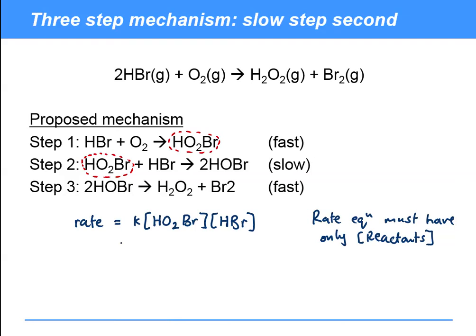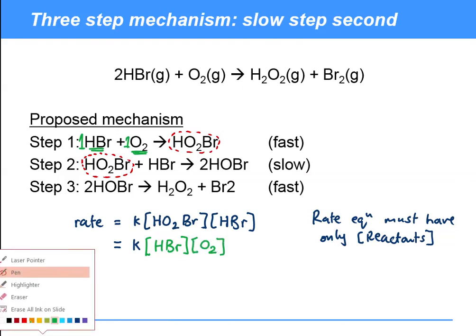Feel free to rewind if that didn't make sense, but that's what I'm going to do. So I'm going to see that this was formed by one oxygen and one HBr, and so I'm simply going to replace HO2Br with an HBr and an O2. And remember there's still going to be an HBr here.